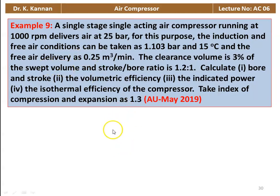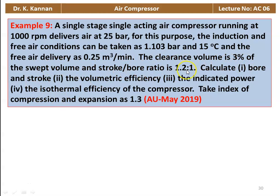Example number 9 from the May 2019 question paper. A single-stage single-acting air compressor running at 1000 rpm delivers air at 25 bar. The induction and free air conditions are taken as 1.103 bar and 15 degrees Celsius. The free air delivered is 0.25 meter cube per minute. The clearance volume is 3% of the stroke volume. Stroke to bore ratio is 1.2. Calculate the bore and stroke, volumetric efficiency, indicated power, and isothermal efficiency. Index of compression and expansion is 1.3.